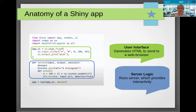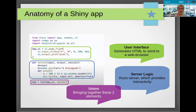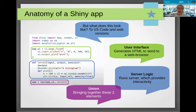Next we have the server logic, which is always in a function called server. You'll always see the same parameters: input, output, and session. Next you'll see two decorators — things with an 'at' sign in front of them — which modify the output of the code. Then we've got another function called plot, which takes in the value from the slider, does some modification, and returns a matplotlib histogram. Finally we need to marry the user interface and the server together — app_ui and the server function — to create a variable called app. The file must always be called app.py, and these parameter names must always stay the same.